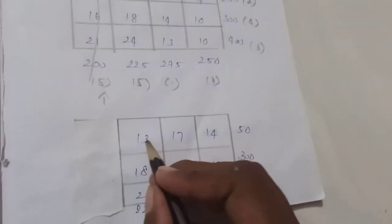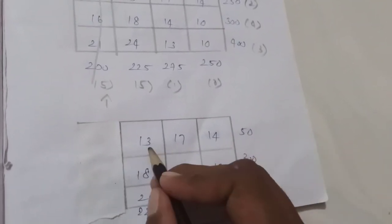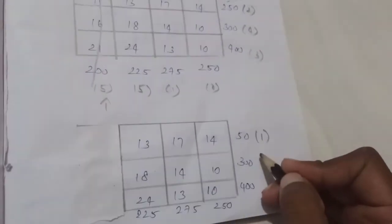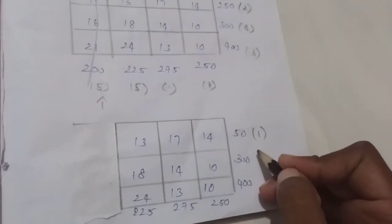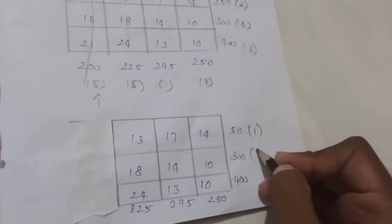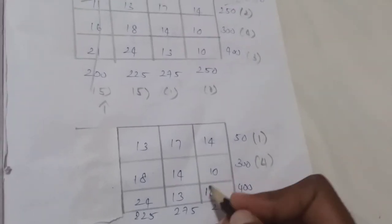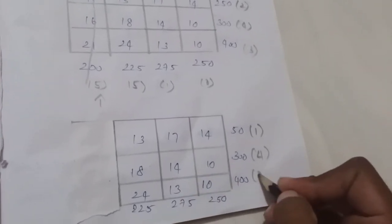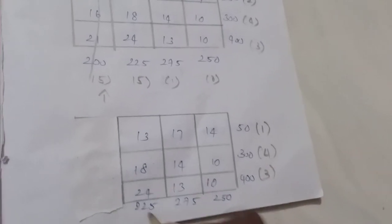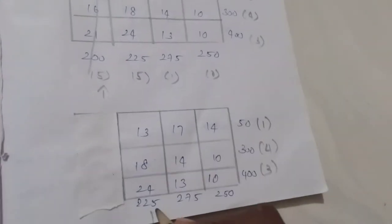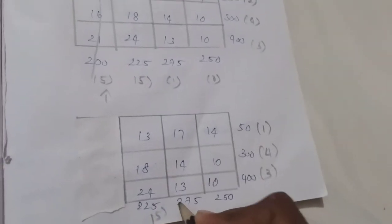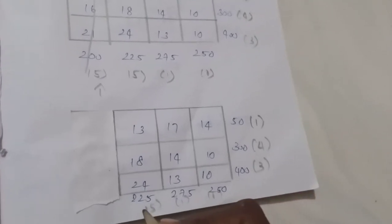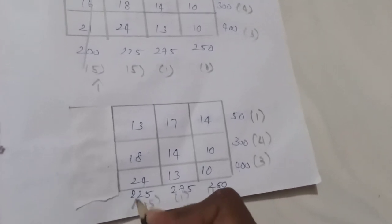In the next iteration, the minimum of 14 and 13 gives a difference of 1. The next difference is 14, here is 4, here is 3 for the least two numbers, here is 5, here is 1, and here is 0. The maximum penalty value is now 5.